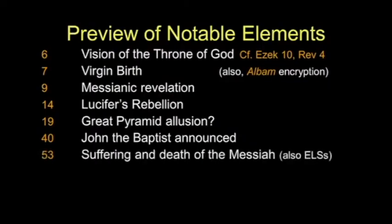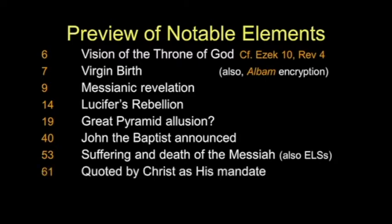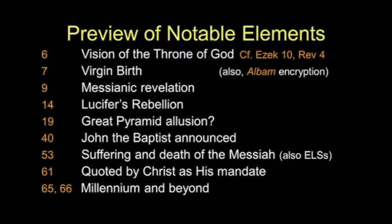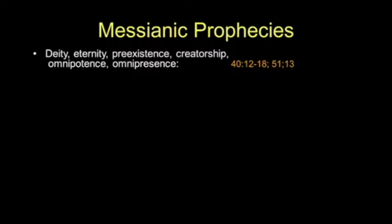John the Baptist emerges in chapter 40. And chapter 53 is an astonishing chapter — the suffering death of the Messiah. We'll see Jesus quote from chapter 61, his mandate when he starts his ministry. When we get to chapters 65 and 66, we'll talk about the millennium and beyond. Most of what we know about the millennium does not come from Revelation chapter 20 — it comes from Isaiah 65 and 66. The deity of Christ, his eternity, pre-existence, creatorship, omnipotence, and omnipresence — we're indebted to Isaiah for insights into all those things.